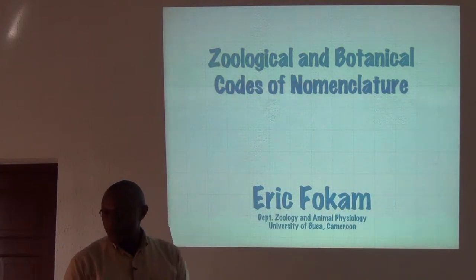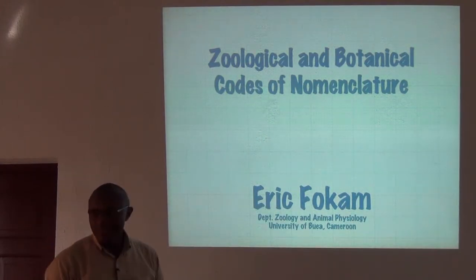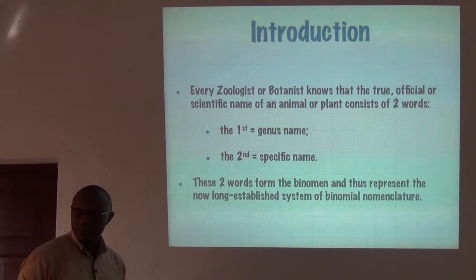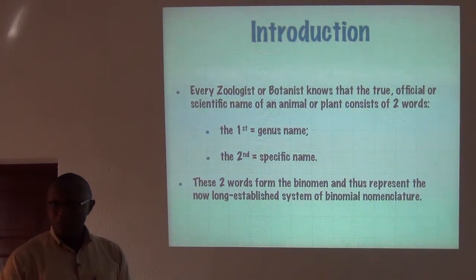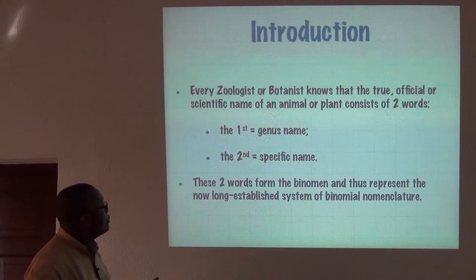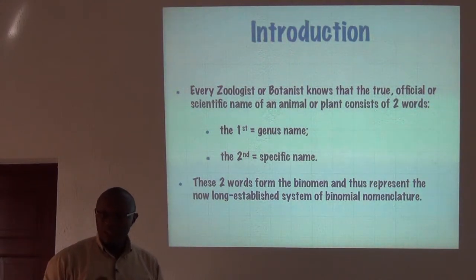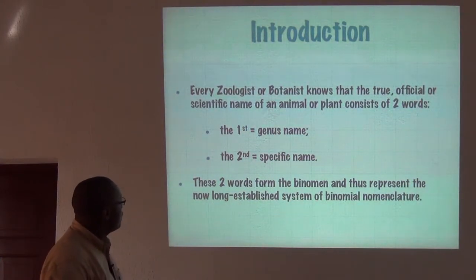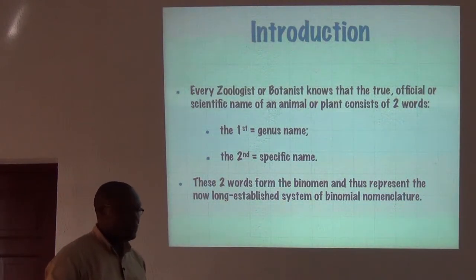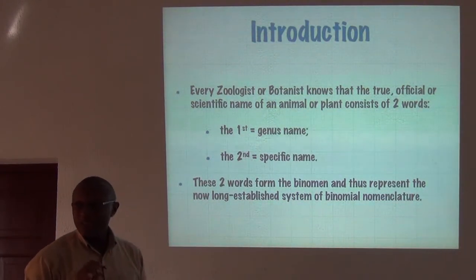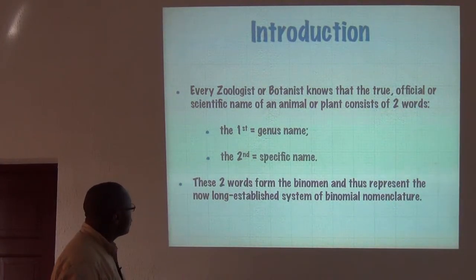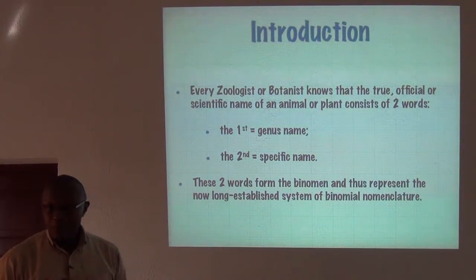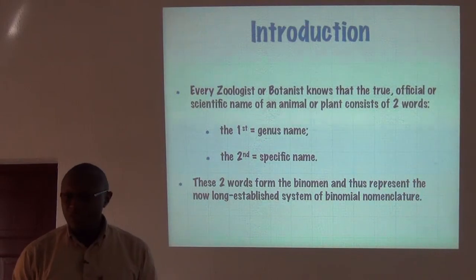We're going to start by saying that every zoologist or botanist knows that the true and official scientific name of an animal or a plant consists of two words: the first is the genus name and the second is the specific name — not the species name, the specific name. These two words form what we call the binomen, representing the long-established system of binomial nomenclature.